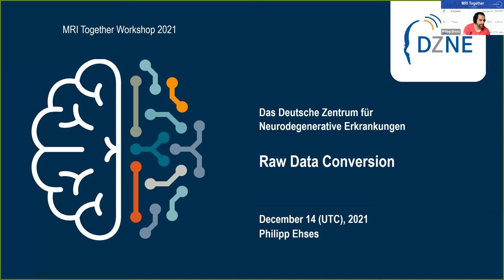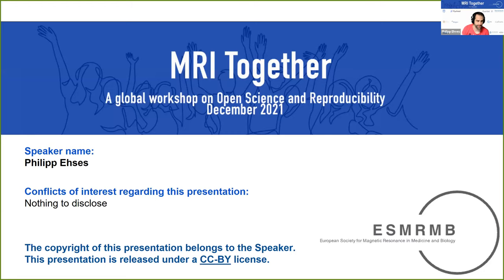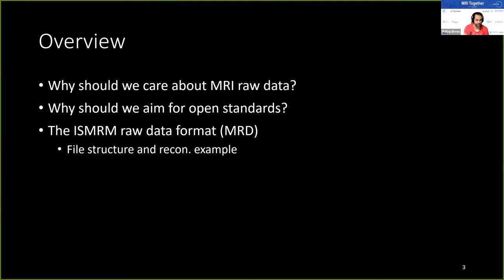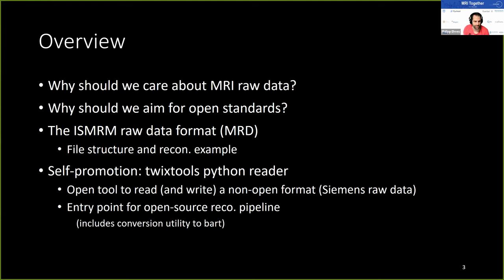Thank you for the introduction, Eric. I have no conflicts of interest regarding this presentation. Let's start with a brief overview. First, I'll try to answer why we should care about raw data and why open standards are important. Next, we'll talk about the ISMRM raw data format, its file structure, and present a reconstruction example from MRI raw data. Then I'll do a little self-promotion and present the TwixTools Python reader, an open tool that reads Siemens raw data. TwixTools can also act as an entry point into open-source reconstruction pipelines, and there's also a possibility to use it as a conversion tool to BART or other tools.